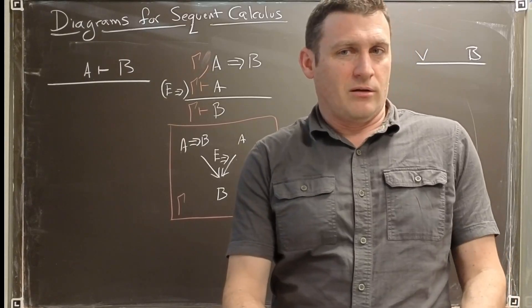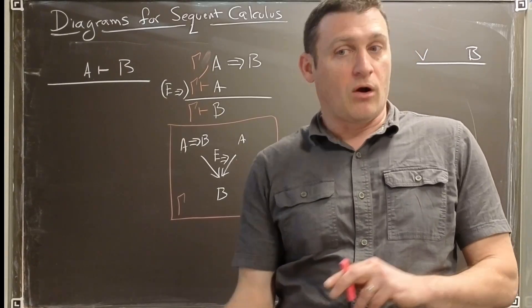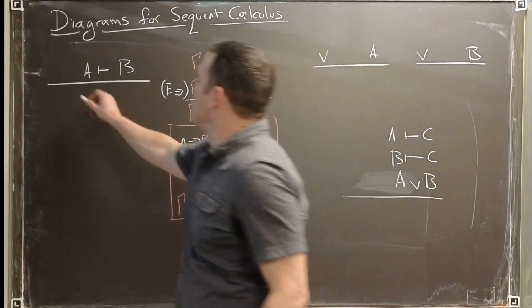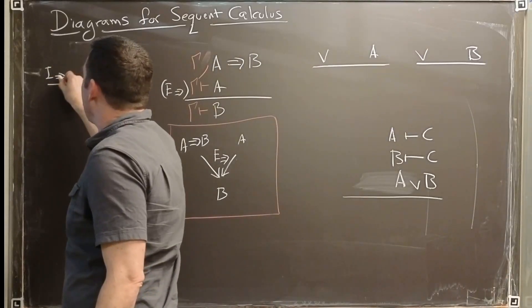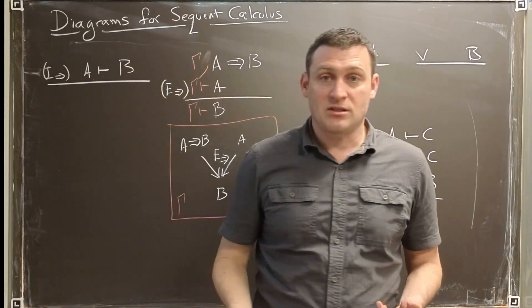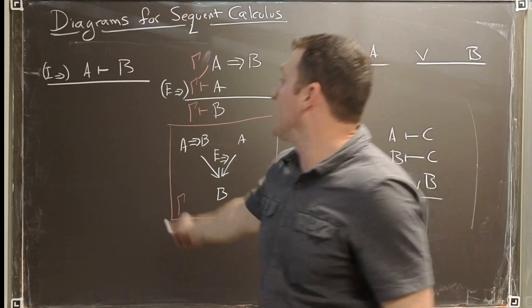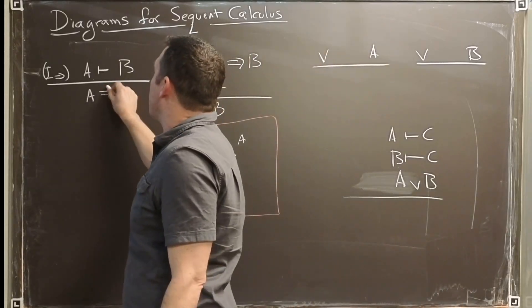What about the other one? If we're going to eliminate a symbol, we're also going to make it. That calls for an introduction. So this one over here is to introduce implication. It's like our negative sign. It just needs one premise, and then it produces the conclusion. A conclusion in this case is that A implies B.